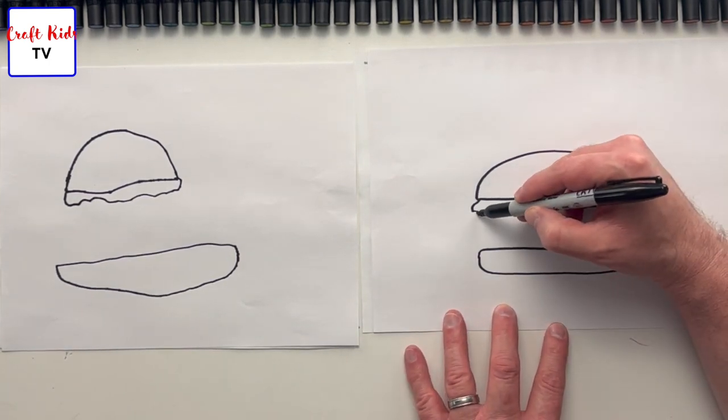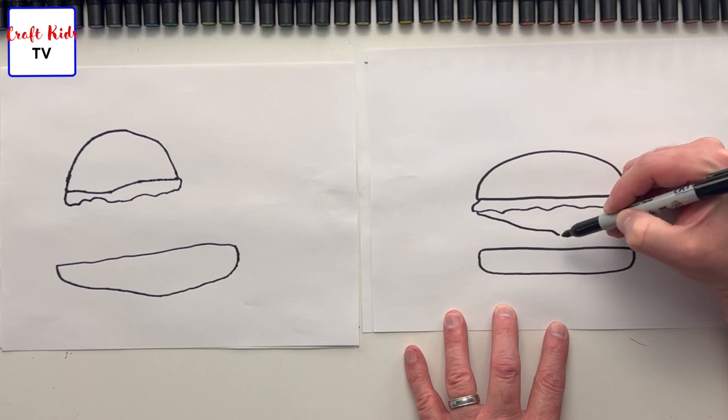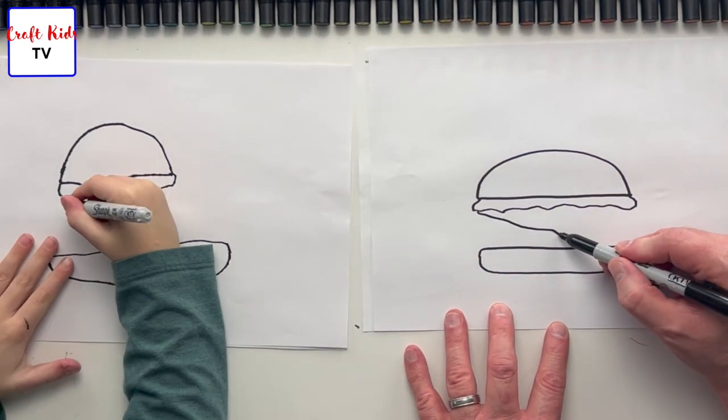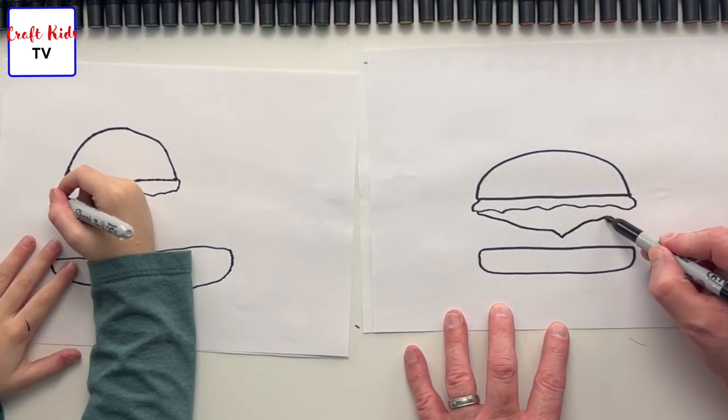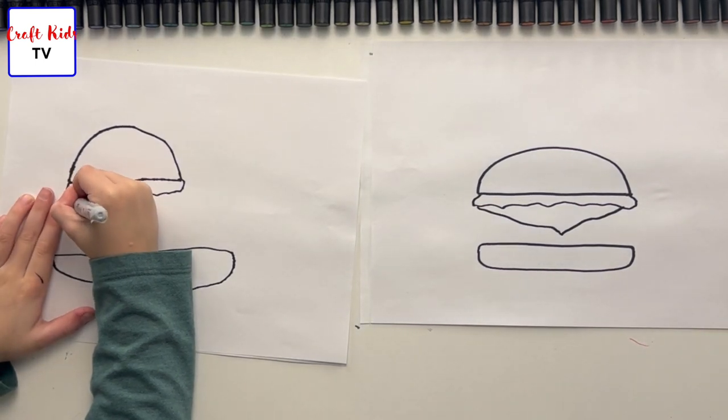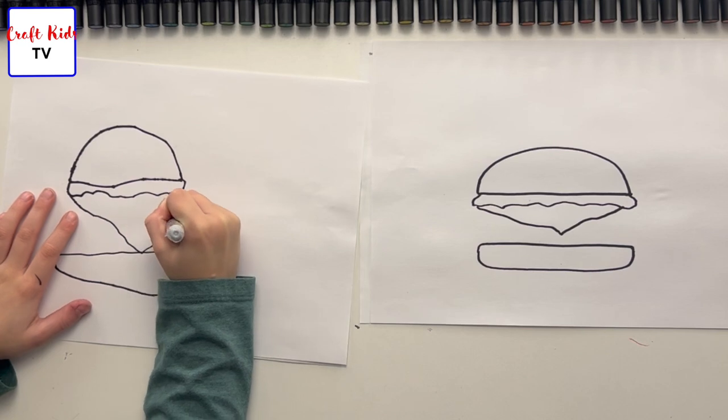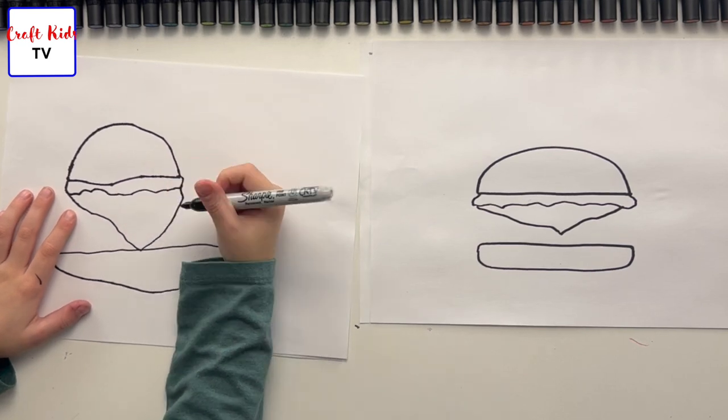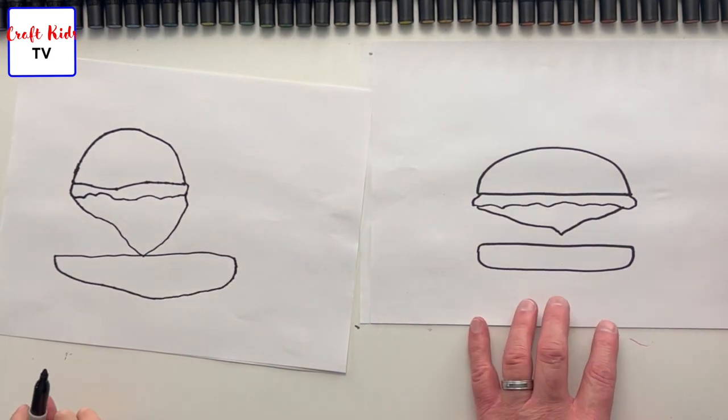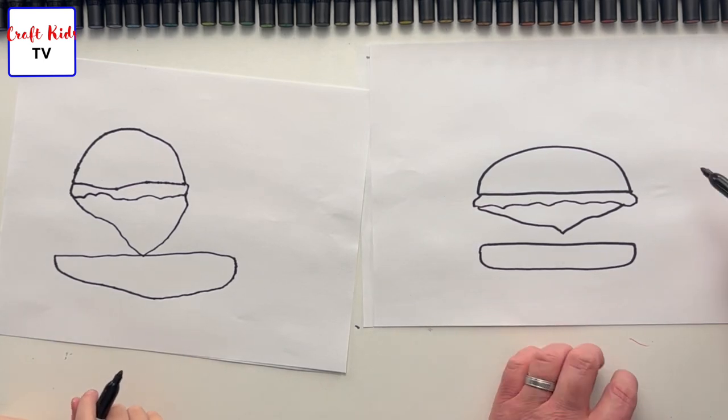The cheese is going to be coming out at an angle. It's kind of gooey, kind of melty, so it's going to come down here and then go back up like a V, like a wiggly V. That's wonderful, Odin! Good job. Now we're going to draw part of the burger.